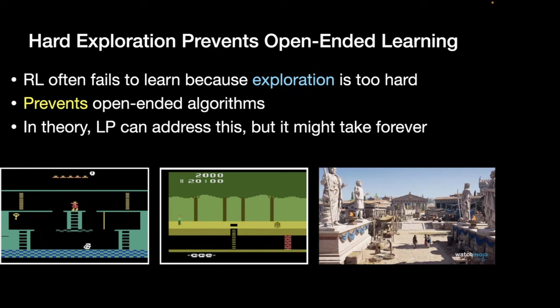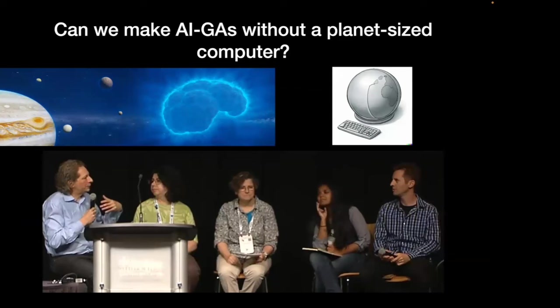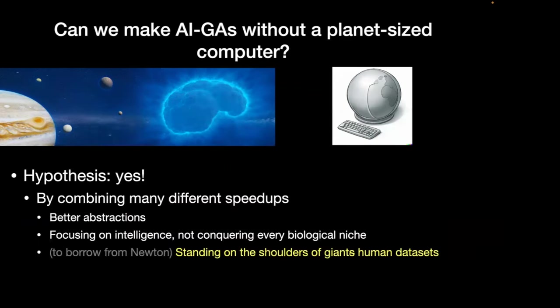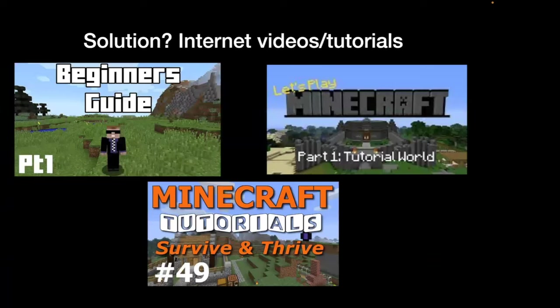In theory, learning progress could address this, but it still might take the agent forever just to learn to walk or open doors. Josh Tenenbaum asked on stage at iClear: can we make an AI-GA without a planet-sized computer — which is what Earth had to make us? The answer is yes. One way is to stand on the shoulders of giant human datasets: use pre-training to accelerate our open-ended algorithms by having agents not start from scratch, but start by watching the internet and learning all the different things that agents can do.